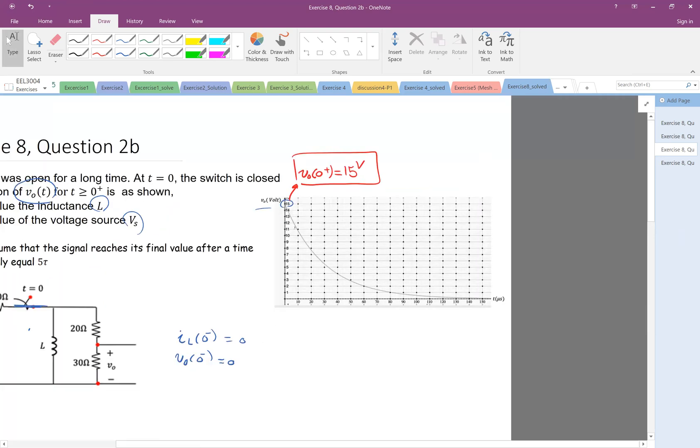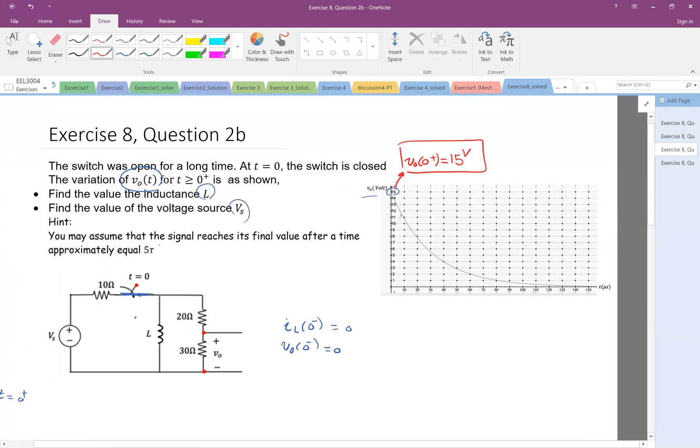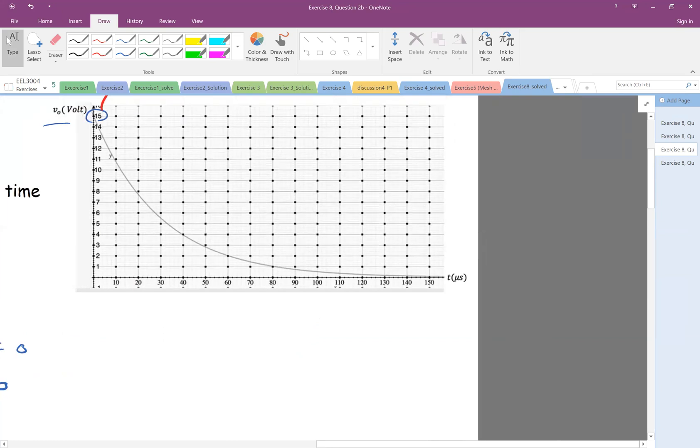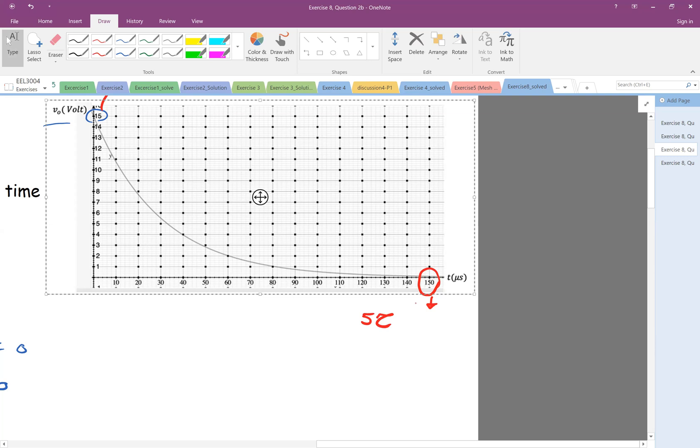The other information, as it says in the hint, you may assume that the signal reaches its final value after approximately five tau. So the other information that we can extract is that this final value at 150 microseconds, that number is five tau. The duration of the transition is five tau, and that is 150 microseconds.